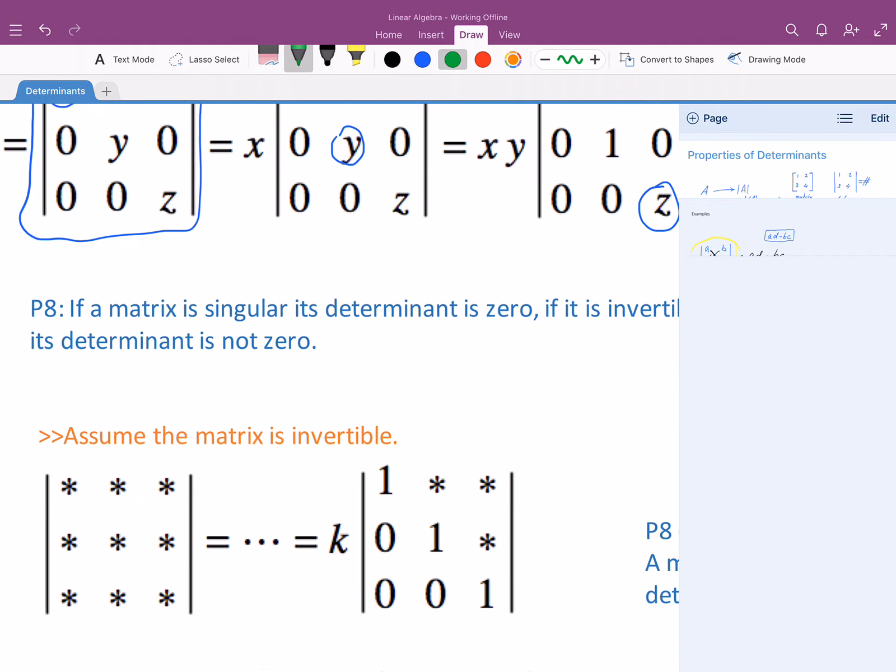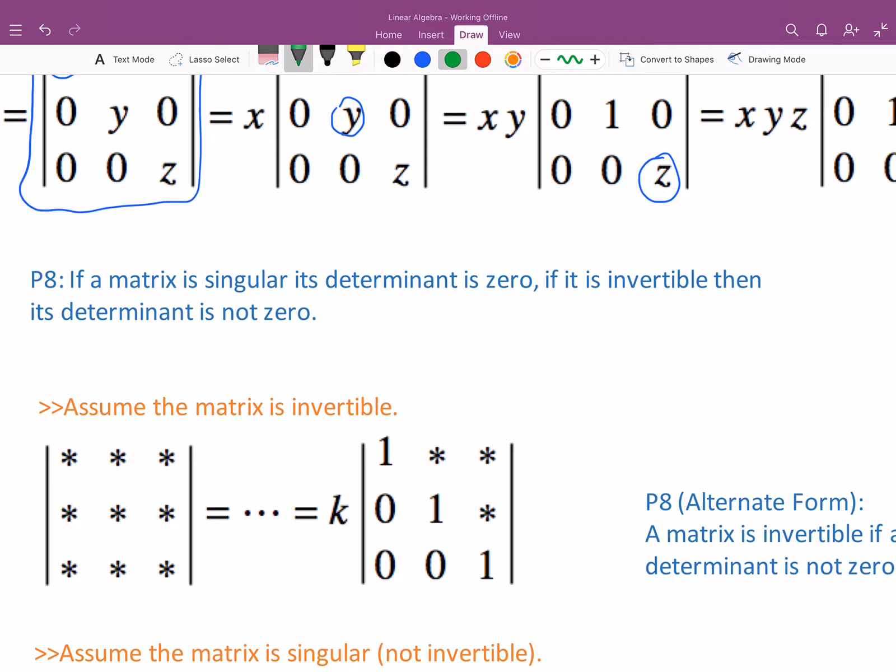If a matrix is singular, which means not invertible, its determinant is 0. If it is invertible, then the determinant is not 0. A better way to write this perhaps, a more concise way to write this is to say, the determinant of A is 0 if and only if A is singular (not invertible).